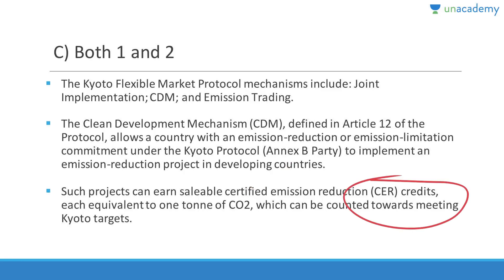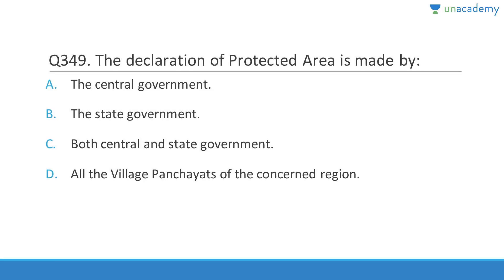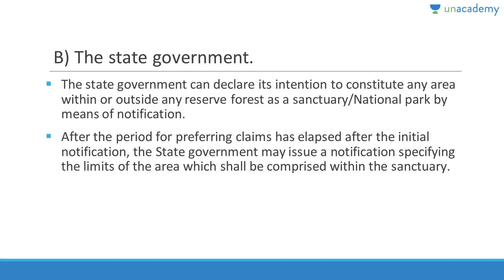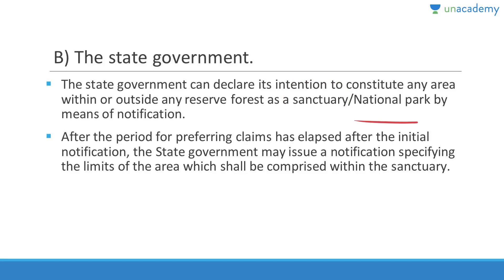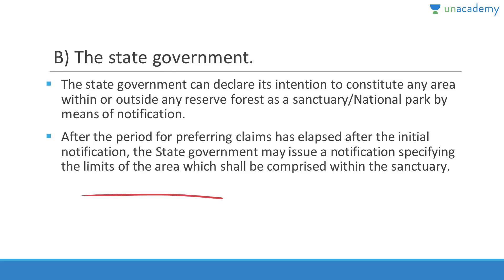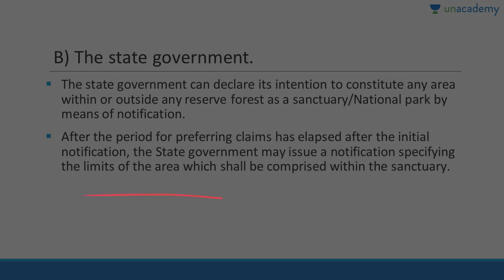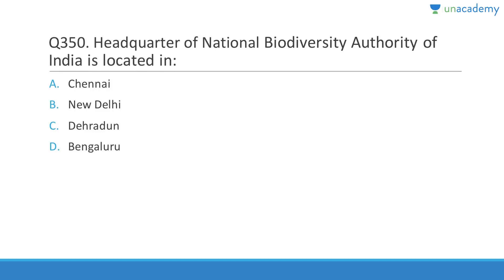Question 349: Declaration of a protected area is made by the state government. Answer is B. The state government can declare its intention to constitute any area within or outside a reserve forest as a sanctuary or national park through a notification, after the period for preferring claims has elapsed.